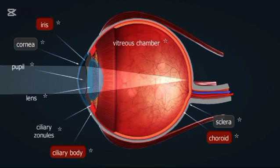The sclera is the tough, white outer layer of the eye. It protects the inner structures and gives the eye its shape. The cornea is the clear, dome-shaped surface at the front of the eye. It helps focus light as it enters the eye.